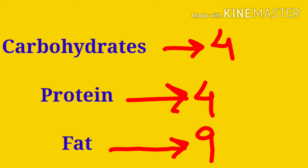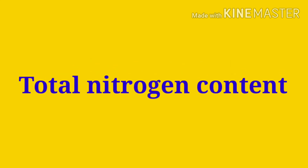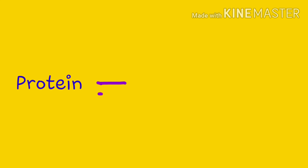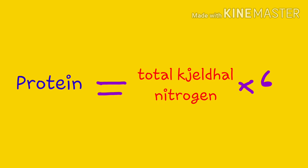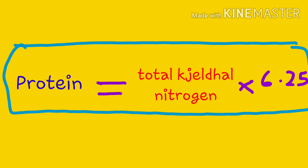Now, what are we left with? We are left with protein. In the case of protein, the total nitrogen content needs to be determined — which we usually do by the Kjeldahl method — and for the final calculation of protein we use the formula: total Kjeldahl nitrogen multiplied by 6.25. This 6.25 is simply a conversion factor; it varies from product to product depending on the percentage of soluble and insoluble protein, and these factors are specified by the USDA.